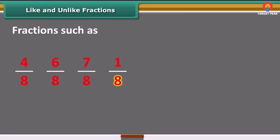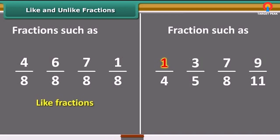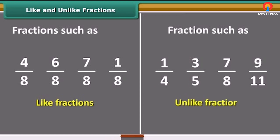Fractions such as 4 upon 8, 6 upon 8, 7 upon 8, 1 upon 8, with the same denominator, are called like fractions. Fractions such as 1 upon 4, 3 upon 5, 7 upon 8, 9 upon 11, with different denominators, are called unlike fractions.